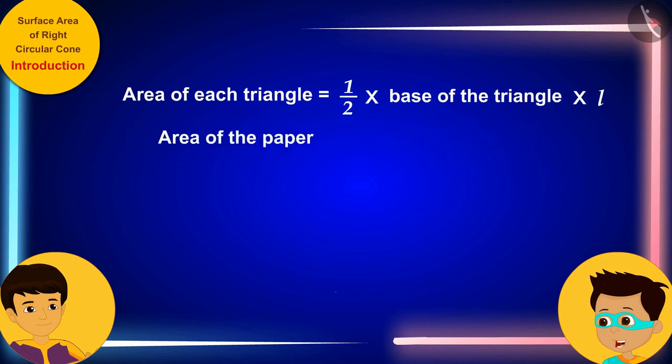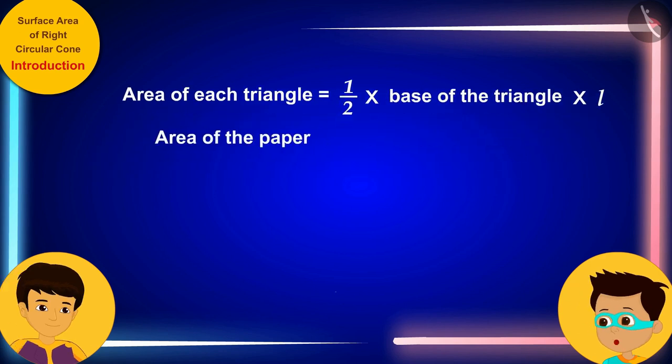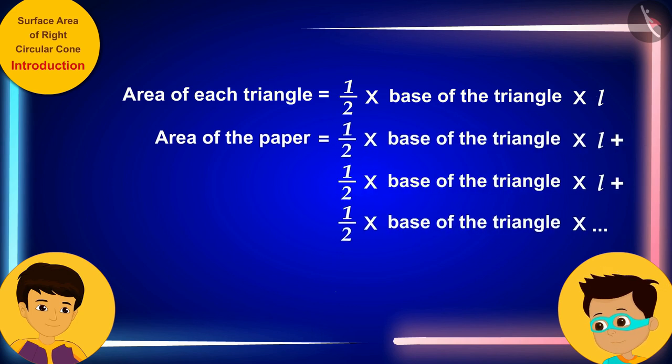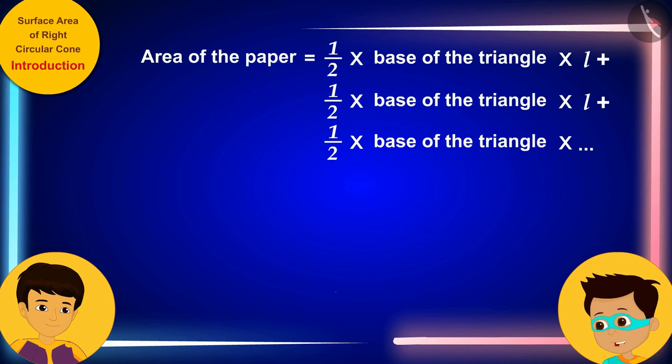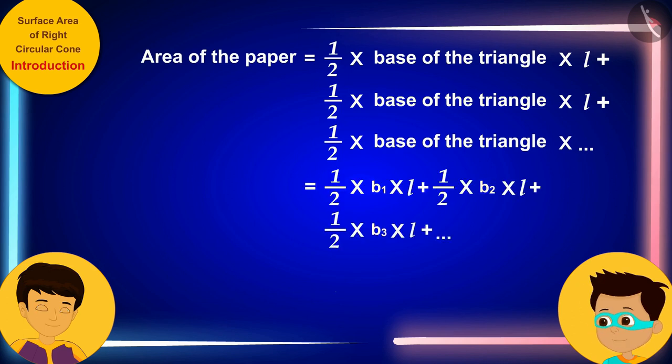And see, the area of the entire paper will be equal to the sum of the areas of all these pieces. Now, if we represent the bases of all these triangles by writing B1, B2, B3, etc. respectively, then we can write the sum of the areas of all these triangles in this way.